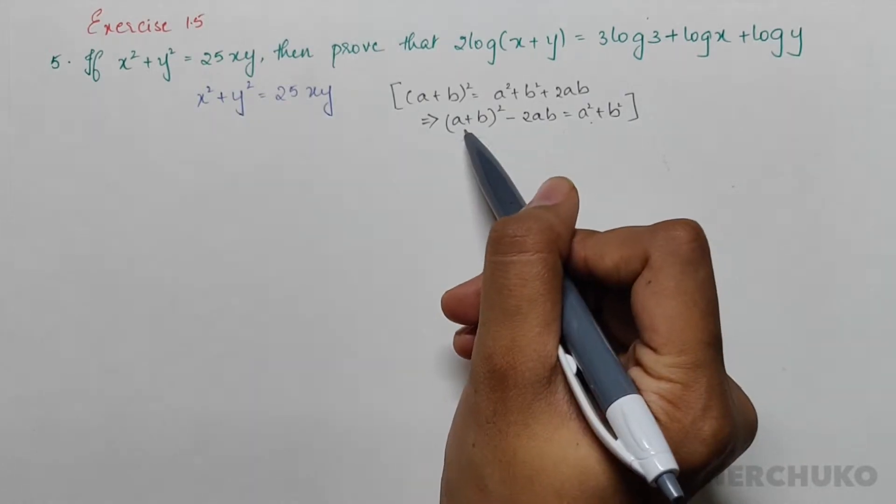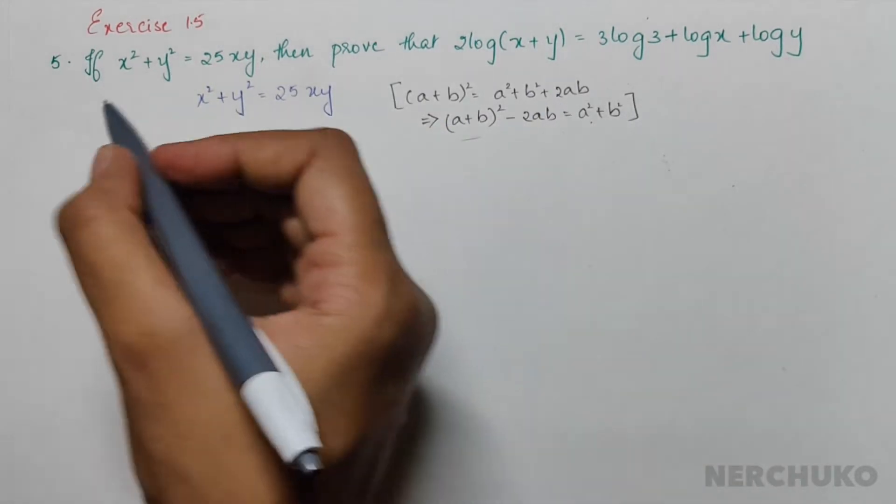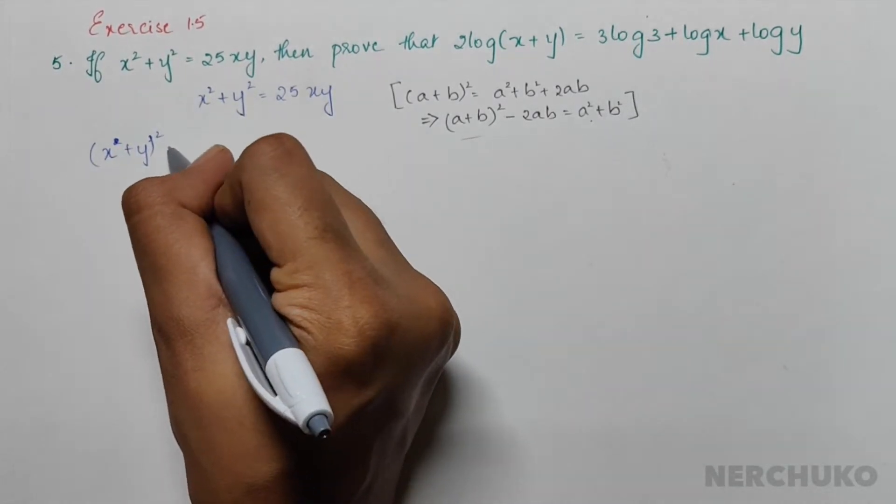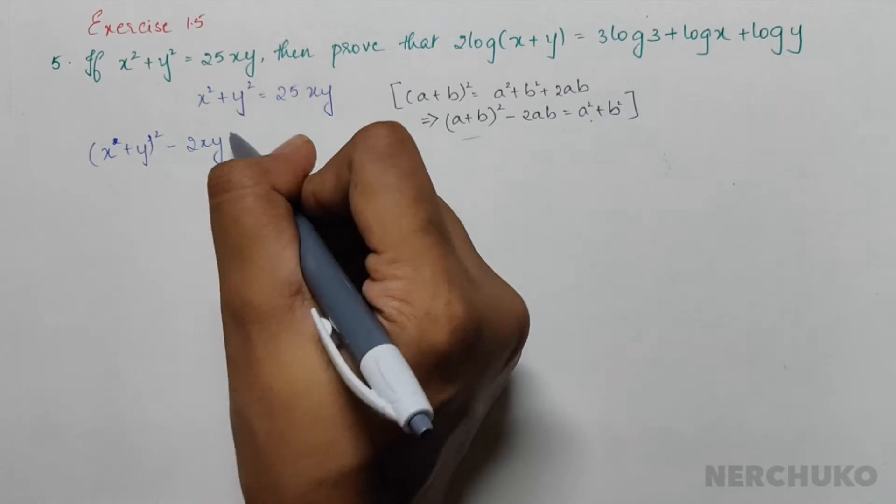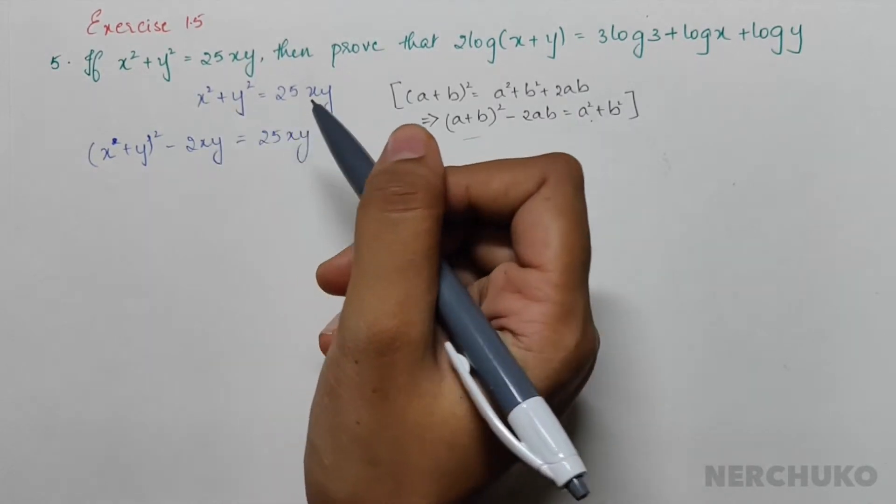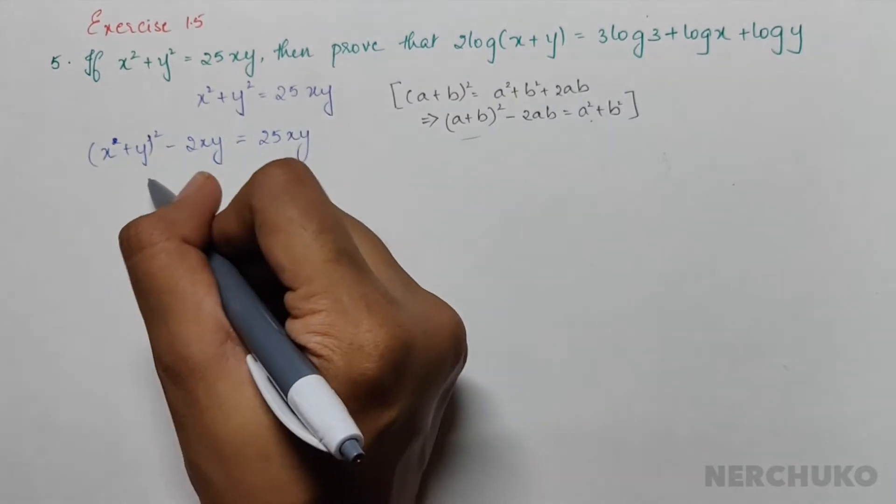(x+y)² - 2xy = 25xy. Taking the xy terms to one side, I would have (x+y)² = 27xy.